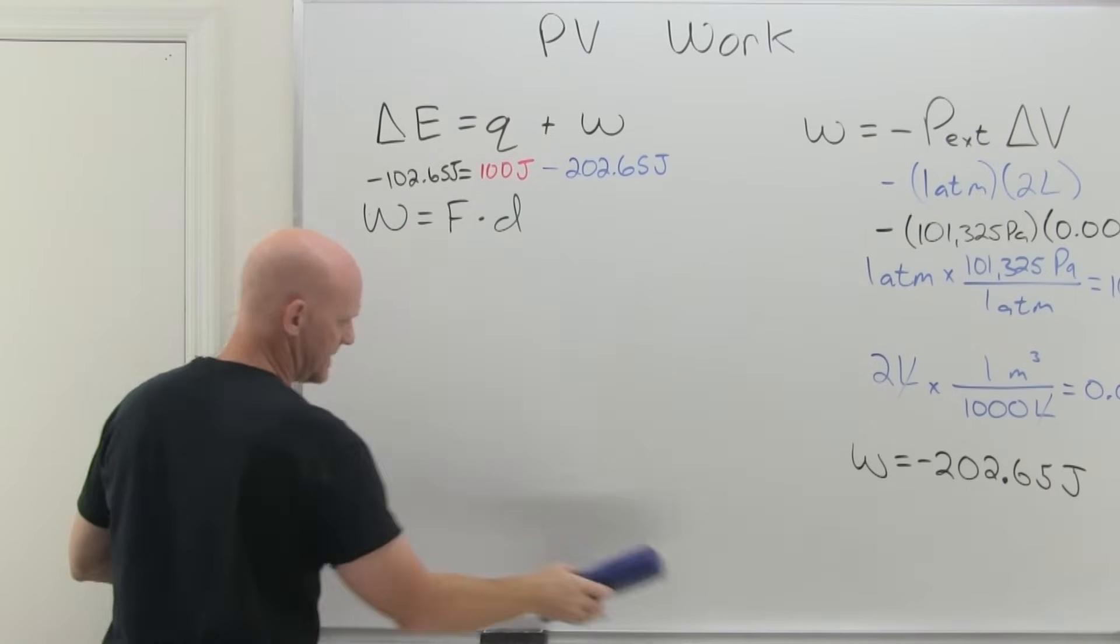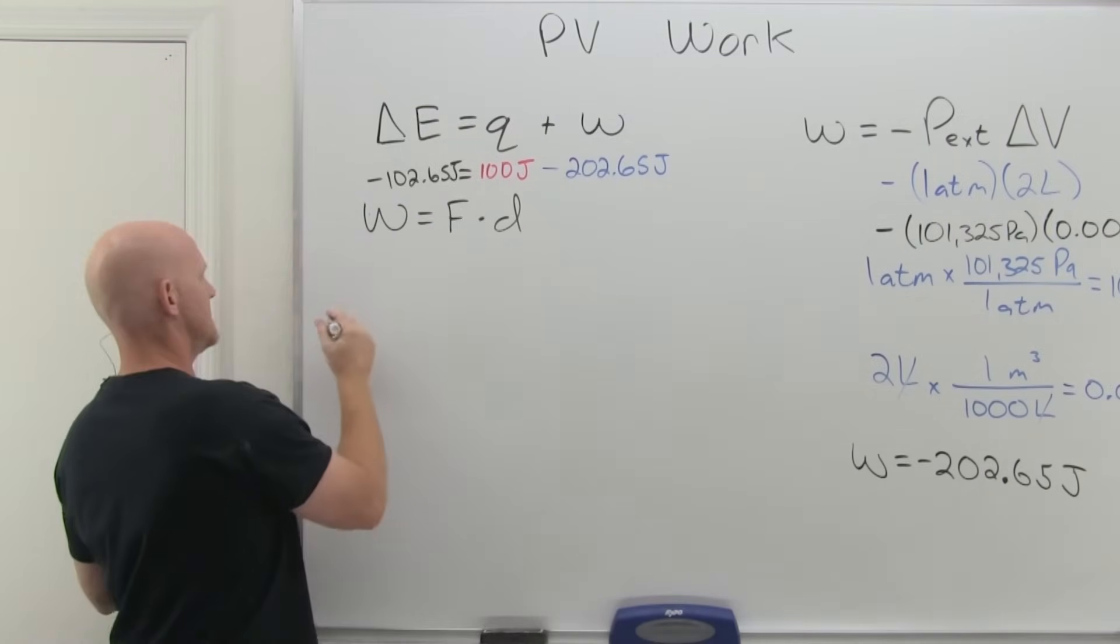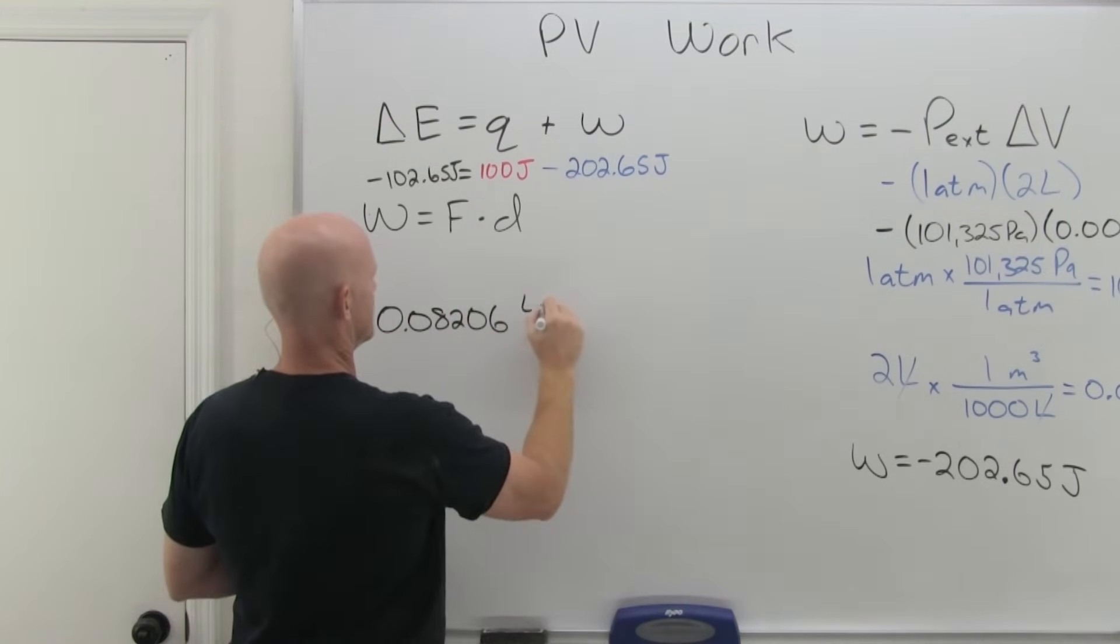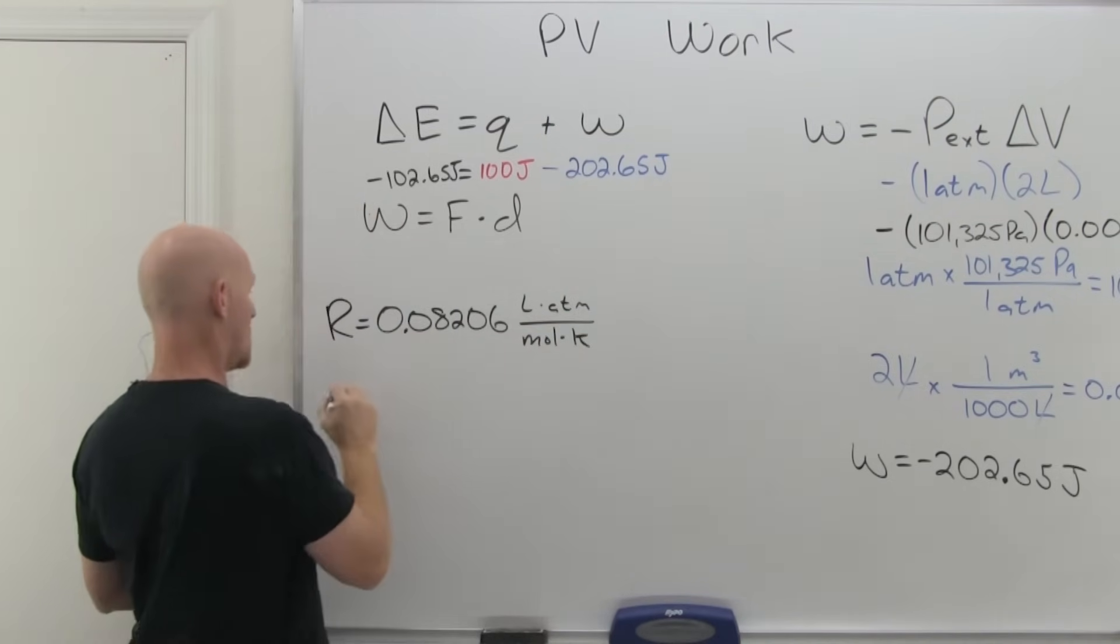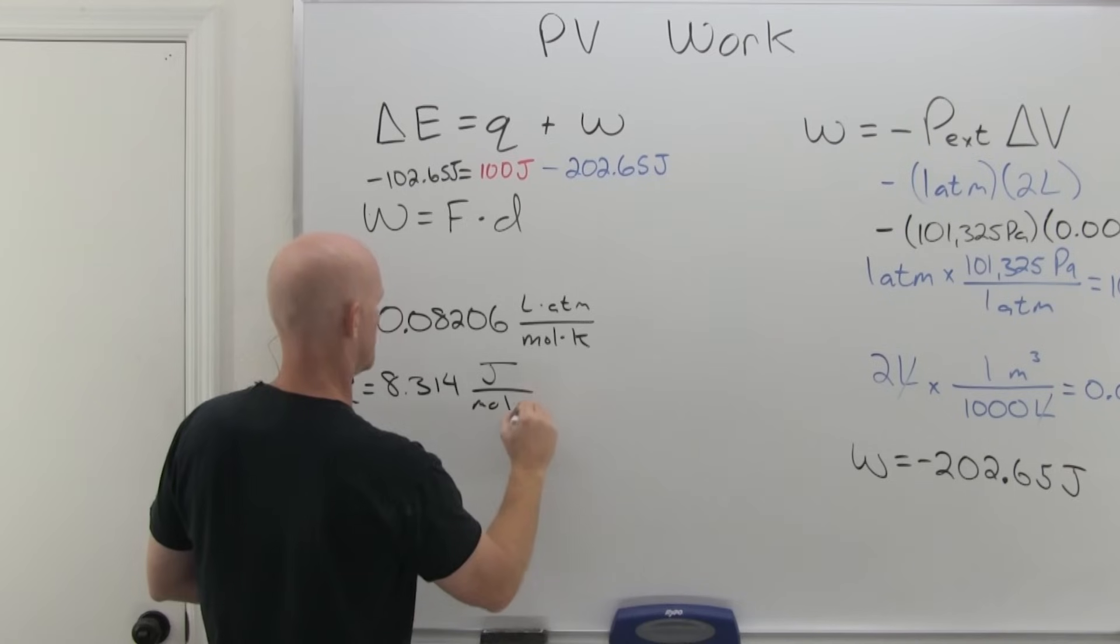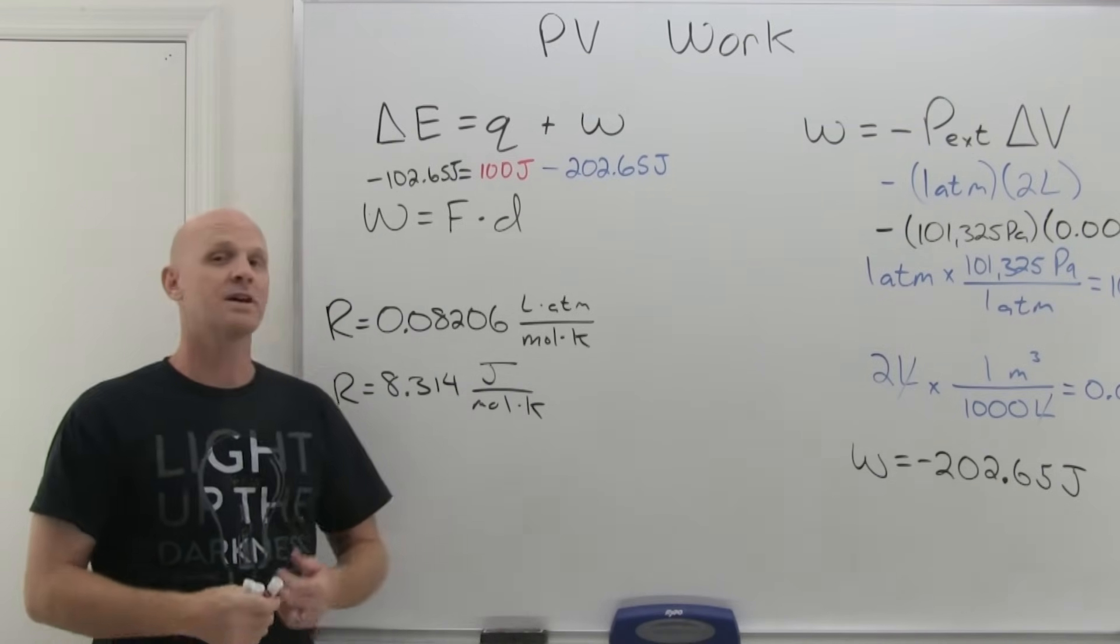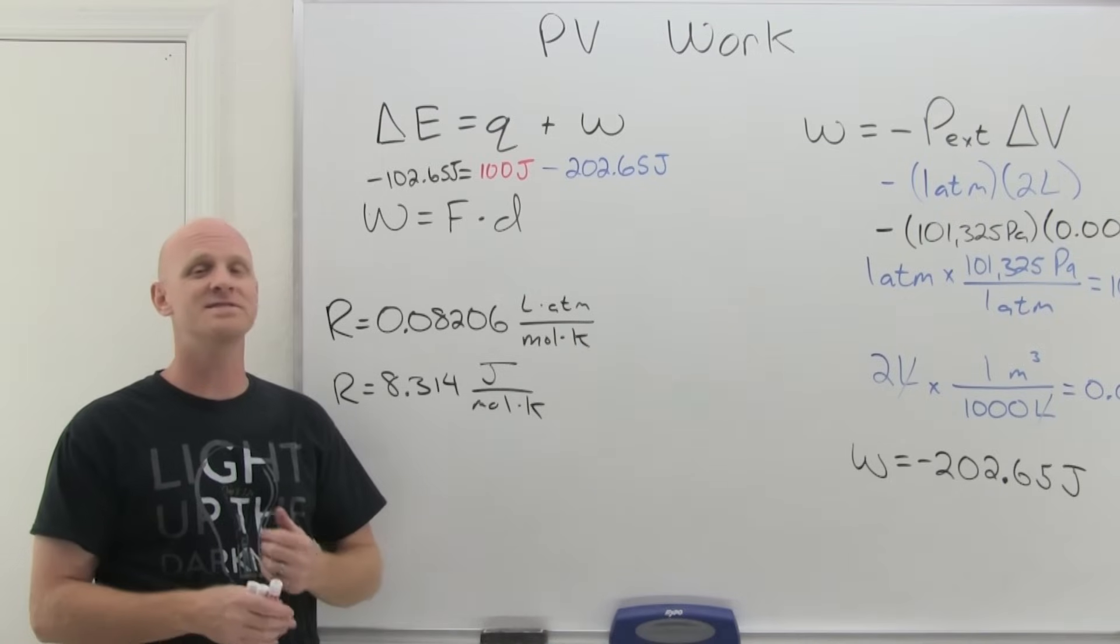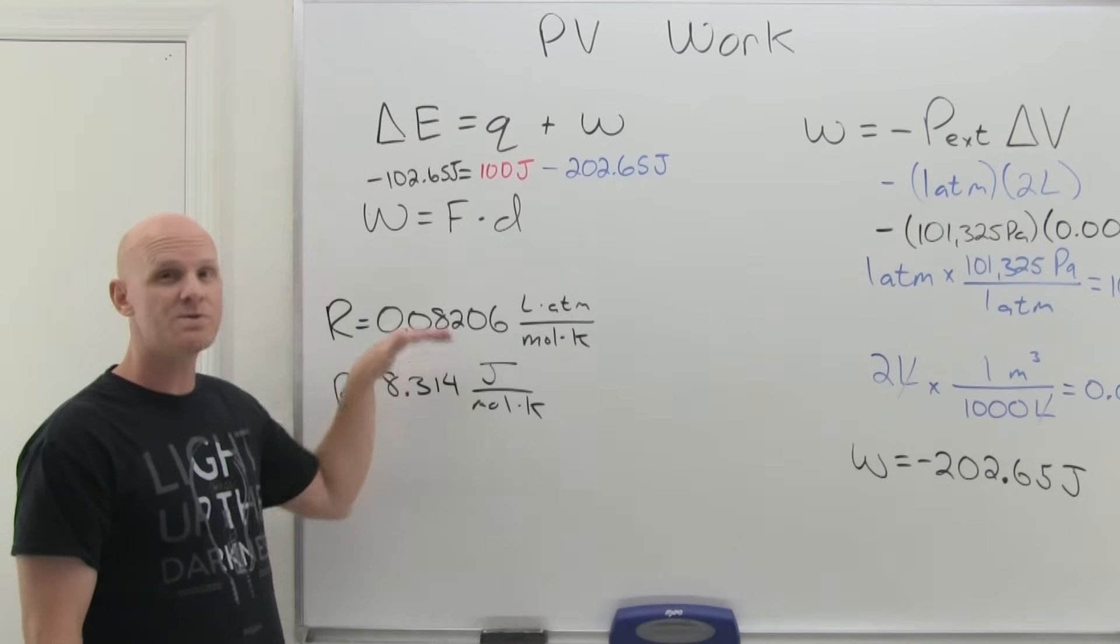So you've got one other route you can really go here and we're going to need some room. And this is going to involve the universal gas constant. So universal gas constant, which we'll cover in chapter 10 on gases. So R here is either 0.08206 liter atmospheres per mole kelvin, or it's often provided as 8.314 joules per mole kelvin. And so it turns out R, this universal gas constant, can be expressed in a whole host of units.